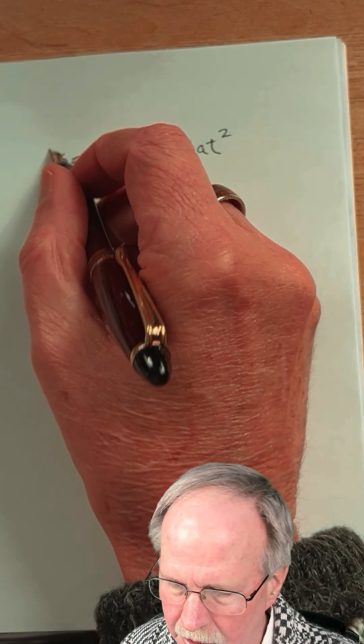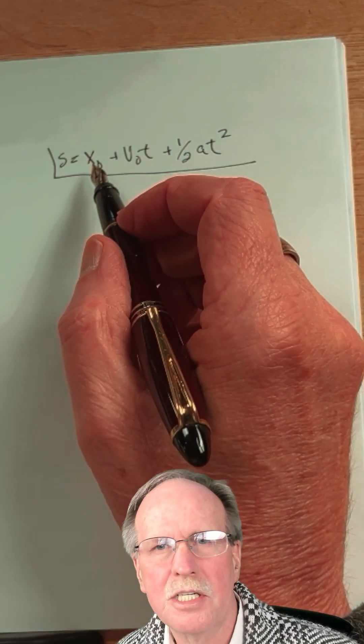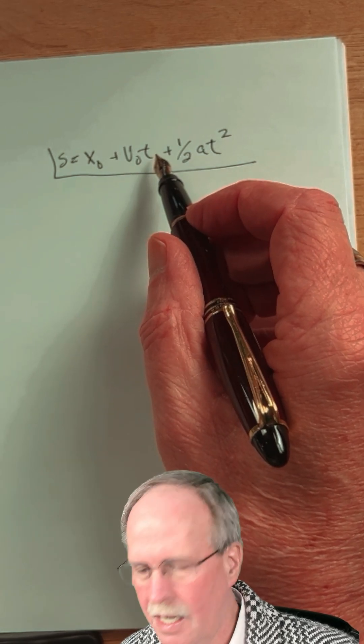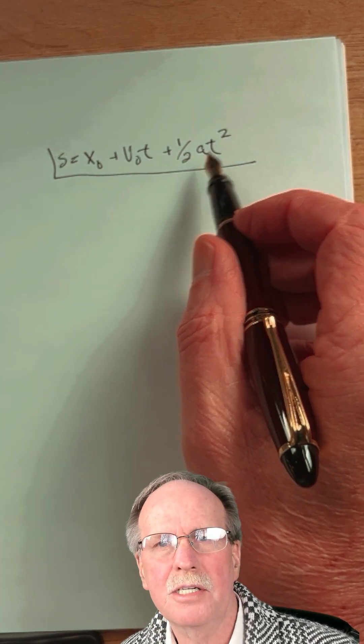The equation for position is right here. It's the original position plus the initial velocity times time plus one half the acceleration times time squared.